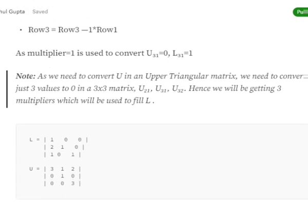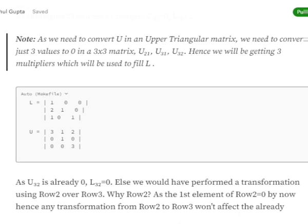After these two operations, L = [[1,0,0],[2,1,0],[1,0,1]] and U = [[3,1,2],[0,0,3],...]. The two multipliers used — 2 and 1 — have been placed in the corresponding positions of L. The remaining position was already 0, so the multiplier for any transformation there would be 0, and that value remains 0.